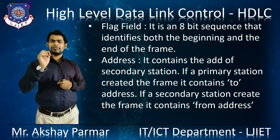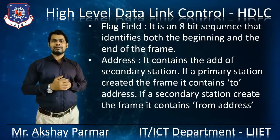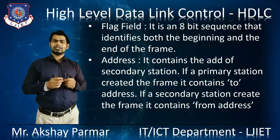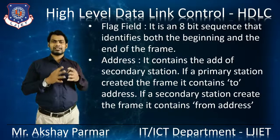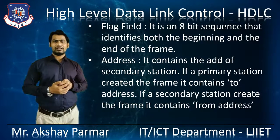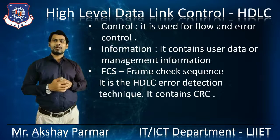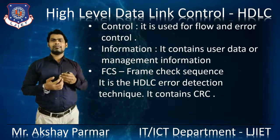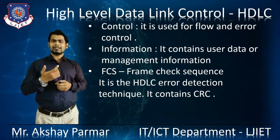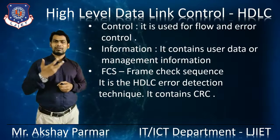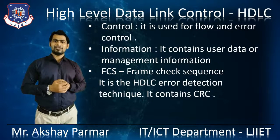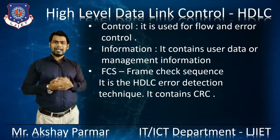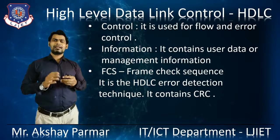Let's discuss what each field stands for. The Flag field is an 8-bit sequence that identifies both the beginning and the end of the frame. The Address field contains the address of the secondary station. The Control field is used for flow and error control information — it contains user data in the I-frame and management information in the U-frame. The FCS stands for Frame Check Sequence, which is the HDLC error detection technique — it contains the CRC.